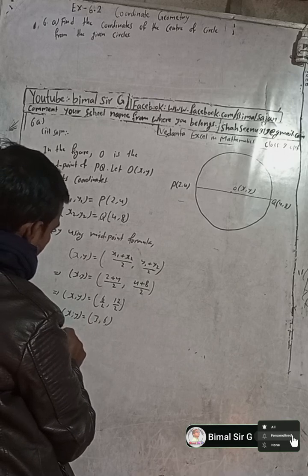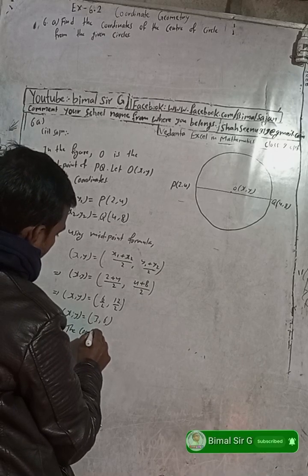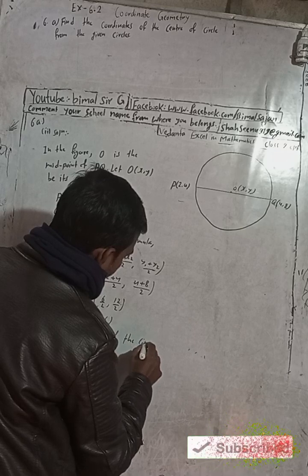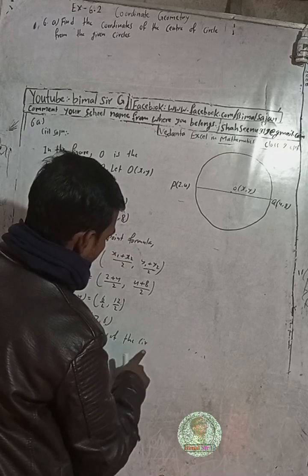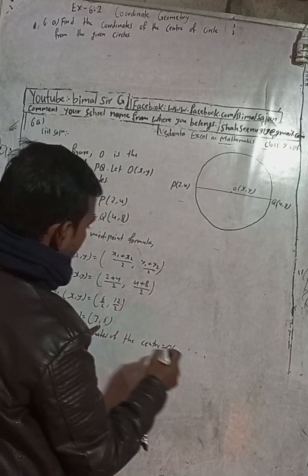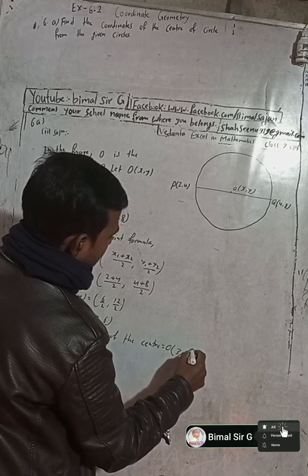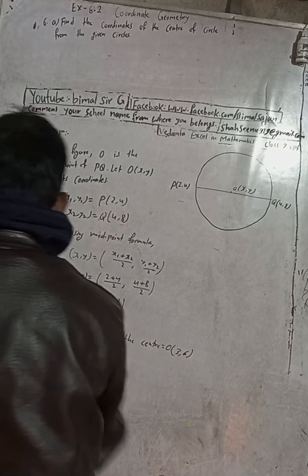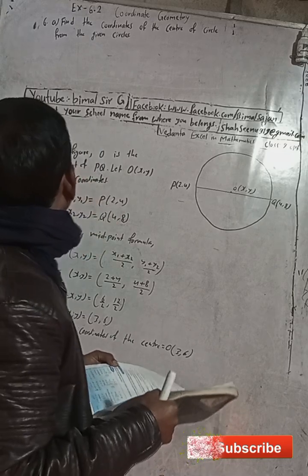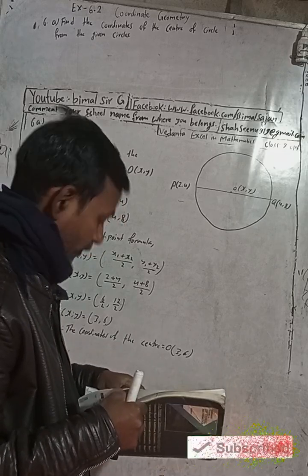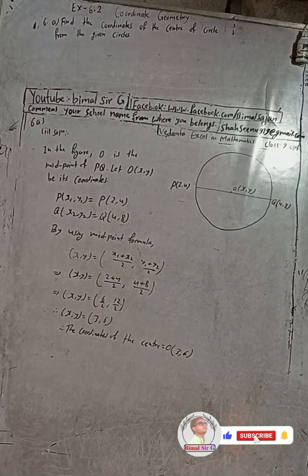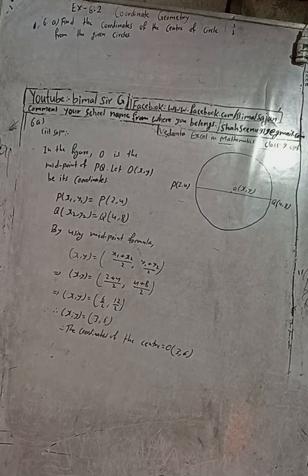Therefore, the coordinates of the center of the circle are O(x, y) equals (3, 6). This is the solution of 6a second part. Now I will solve 6b first part next.